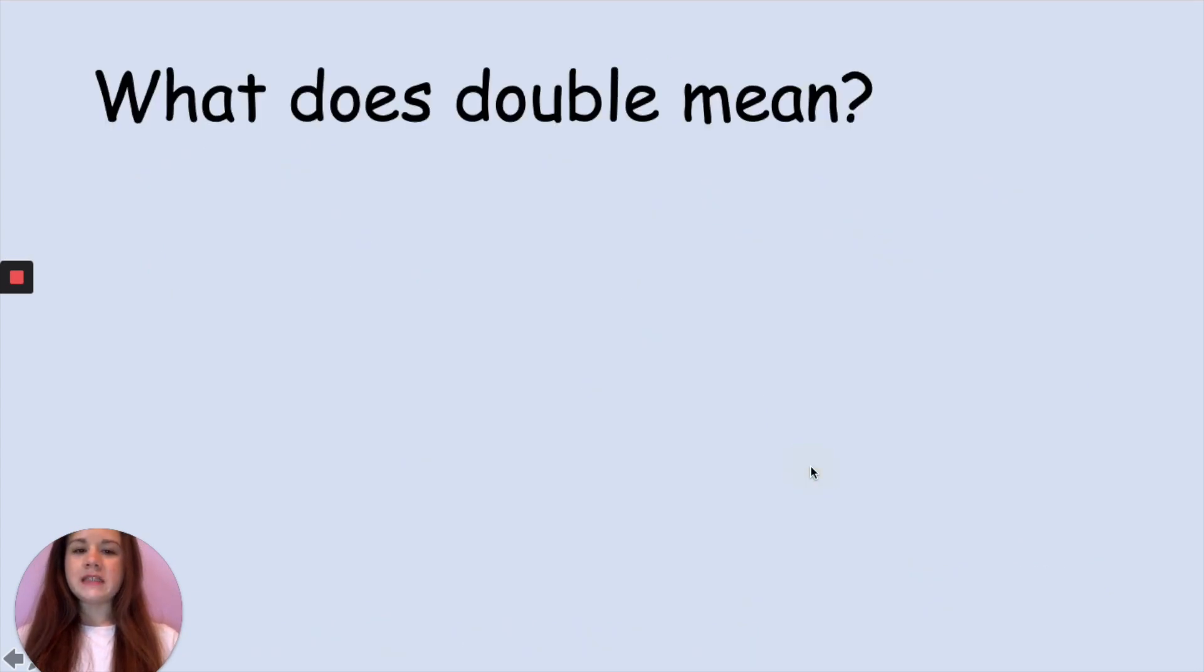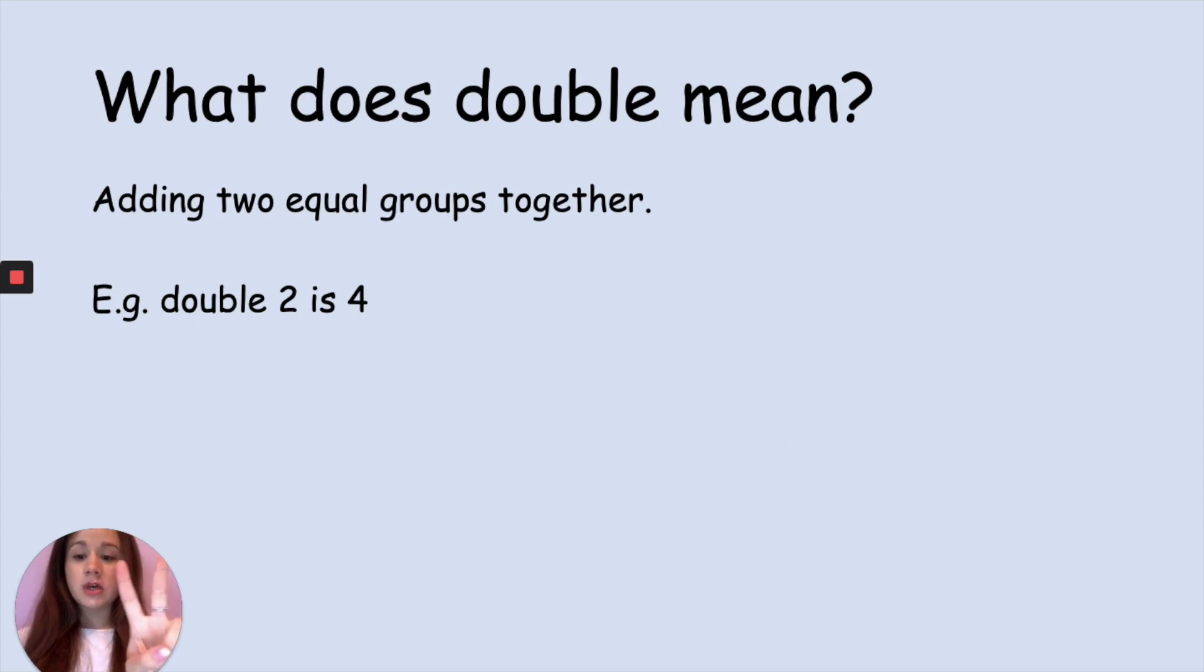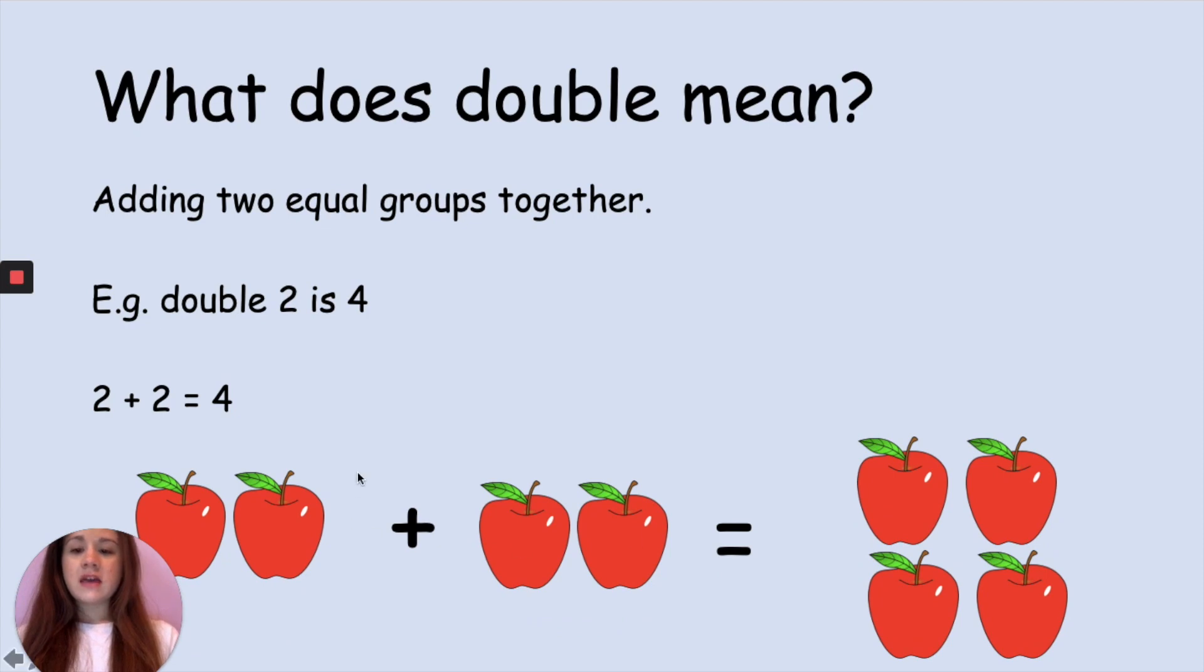Now what does double mean? Pause the video to tell your adult if you think you know. Double means that we are adding two equal groups together. So for example double 2, so 2 and 2, double 2 is 4: 1, 2, 3, 4. 2 add 2 equals 4. So here I have 2 apples so I'm going to get another 2 apples. 2 add 2 equals 4.